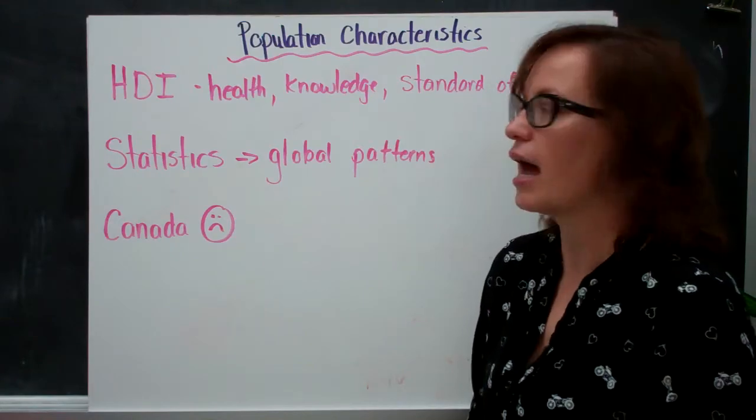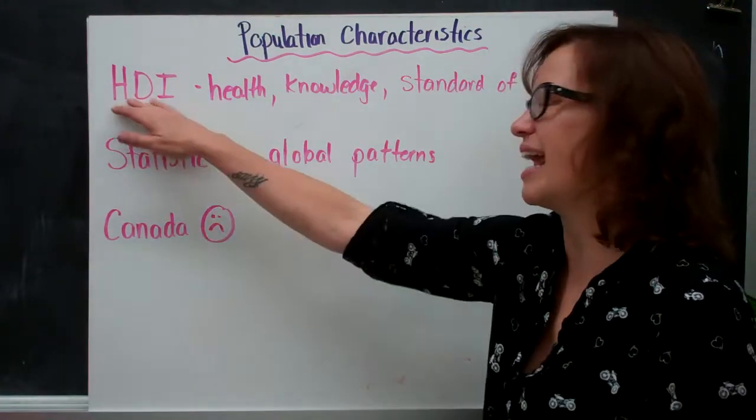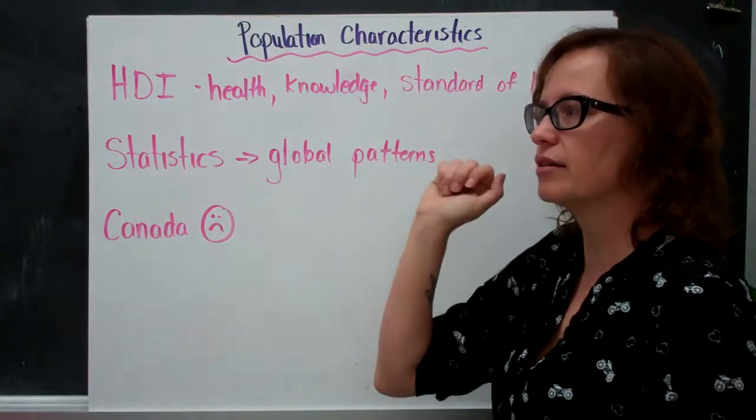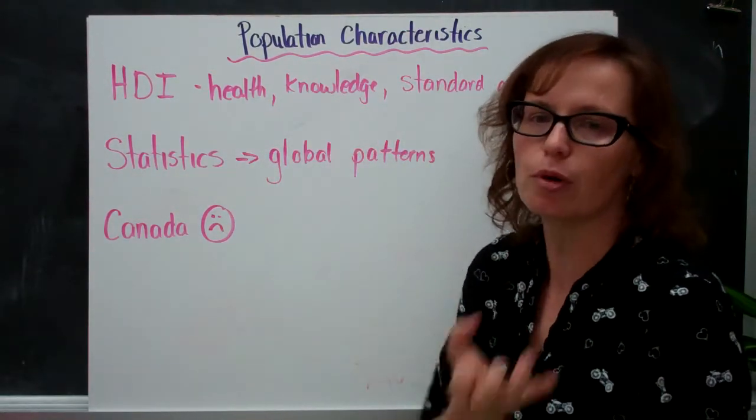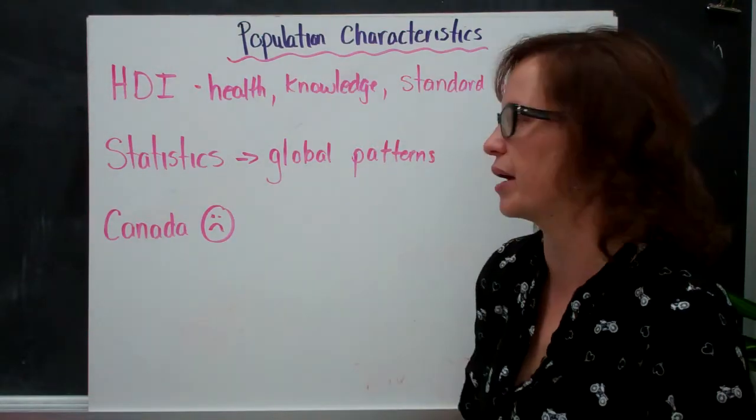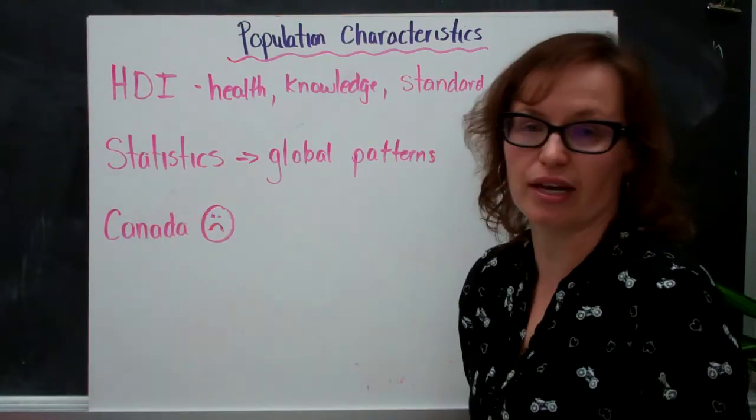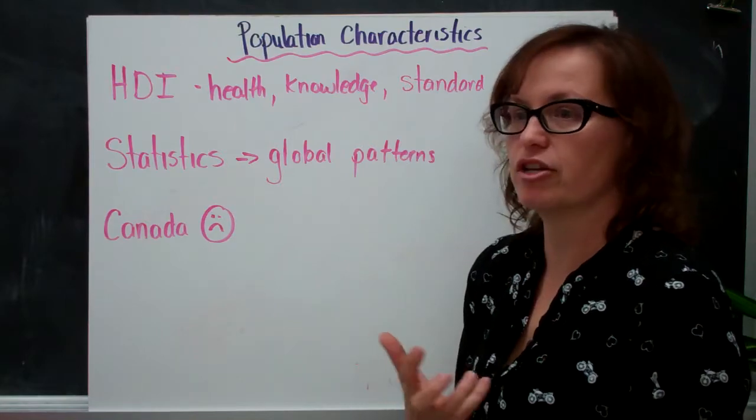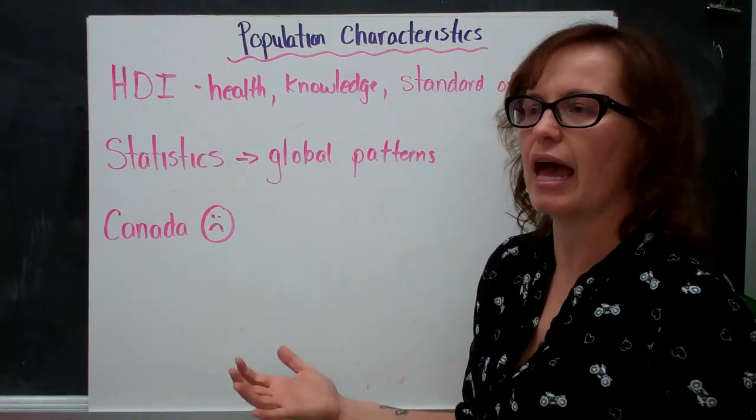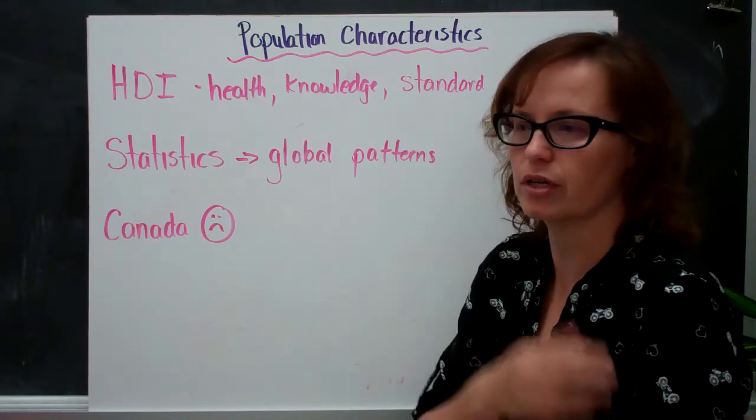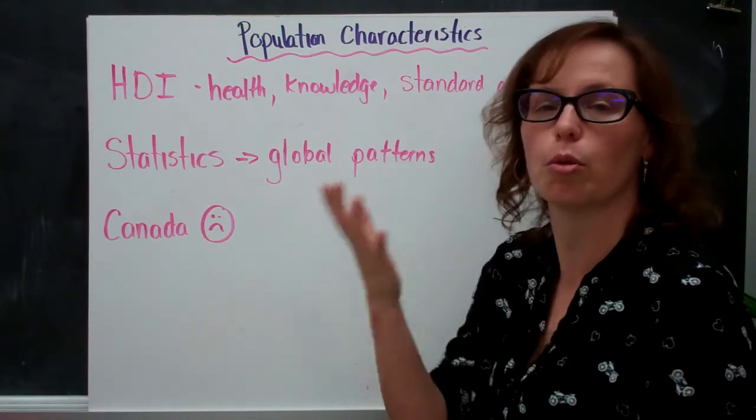The United Nations has a Human Development Index or an HDI that collects that information and that data around health, knowledge and standard of living of people within a community to determine that ranking. They use statistics. So statistics are information, numbers that are collected around people, events and things and then they're put together to create sort of those global patterns.